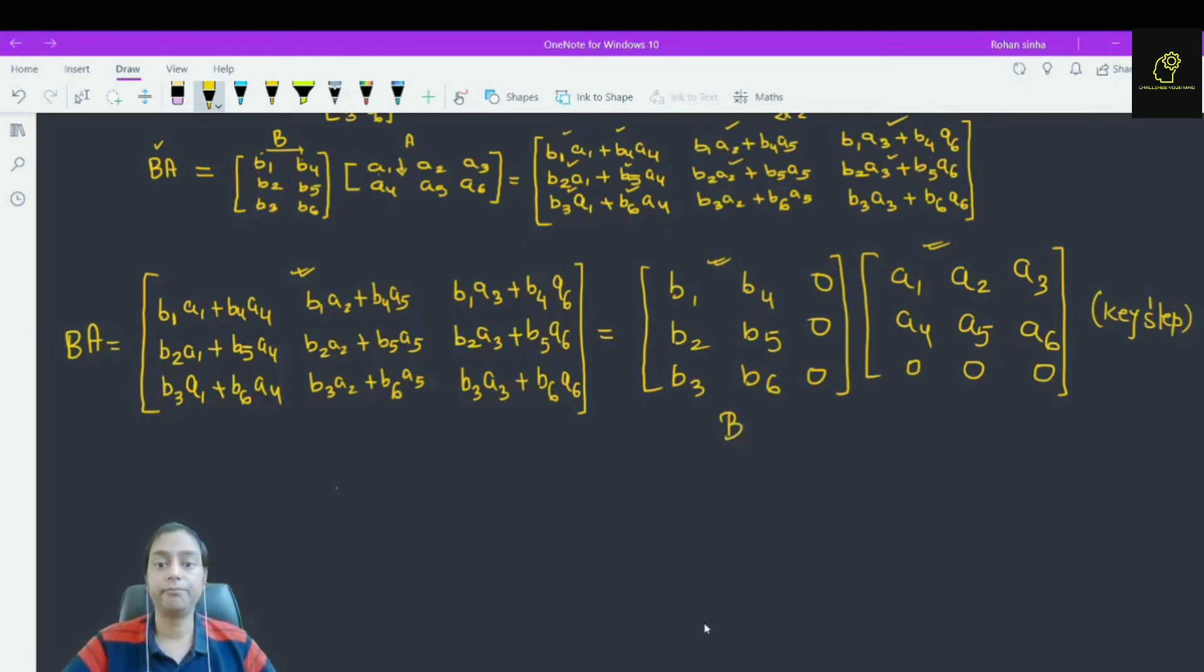We can also write the product of these two matrices. Say, this is matrix B1 and this is matrix B2. This is B1 A1 plus B4 A4. Take this row-wise and this column-wise. You find the same result.